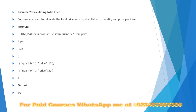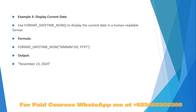Another example is calculating total price. Suppose you want to calculate the total price for a product list with quantity and price per item. For this we use the formula SUM(MAP(data.productList, item.quantity * item.price)), meaning the calculation will be done and the result returned.